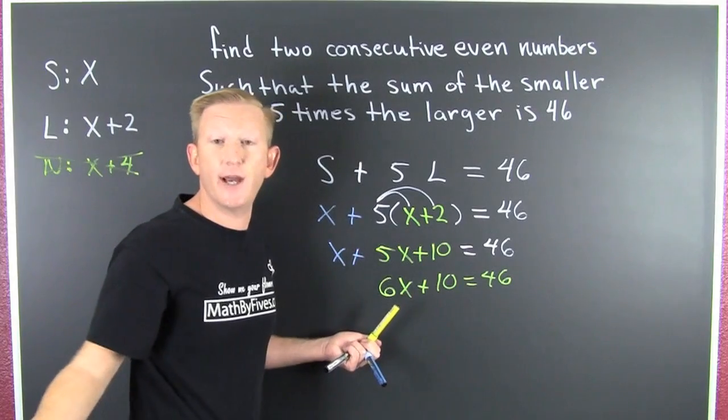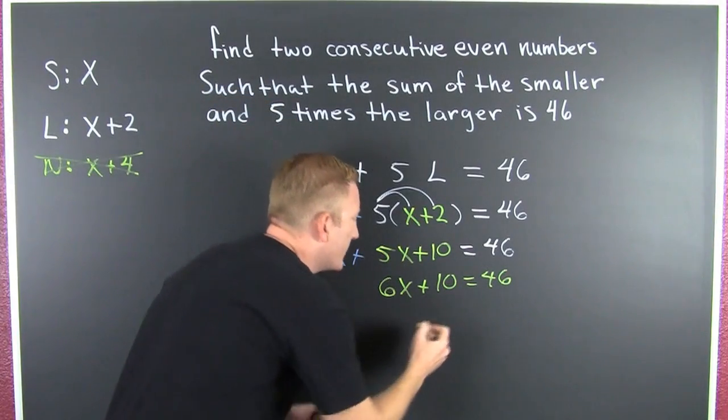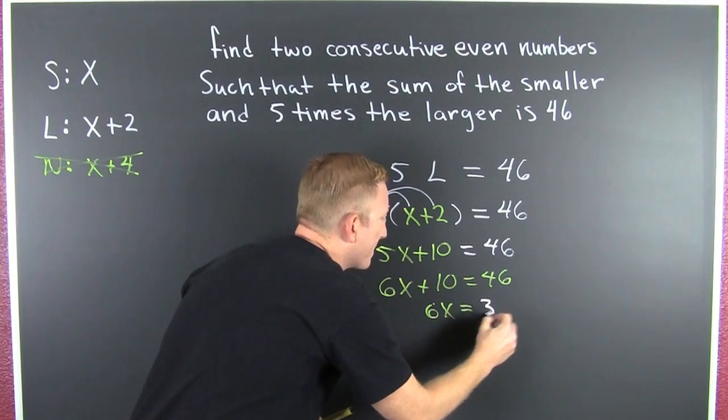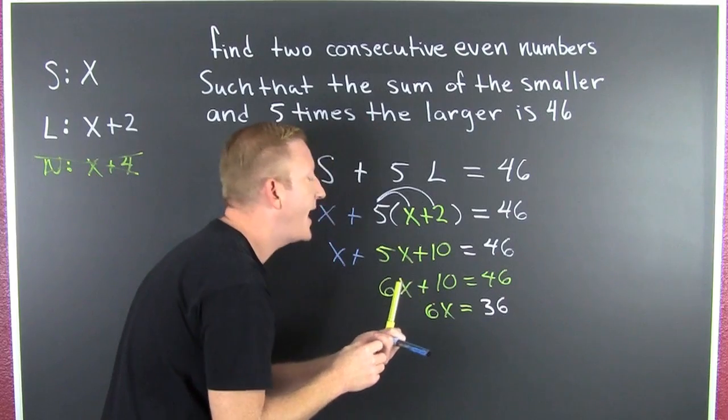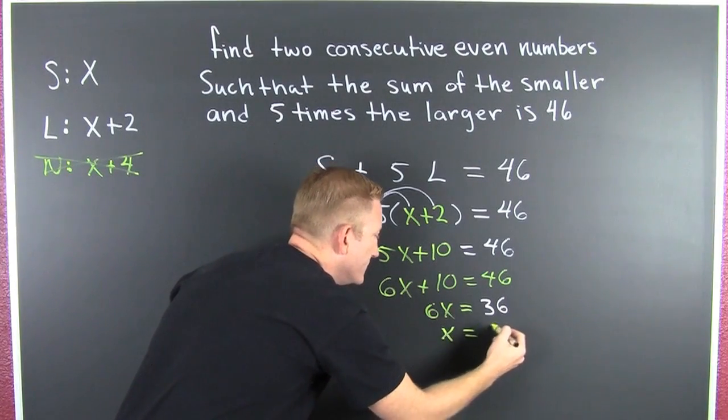Finish him. I subtract the 10 off each side. And when I do, I'm going to have 6x is equal to 36. Alright. I divide both sides by 6. And x turns out to be 6.